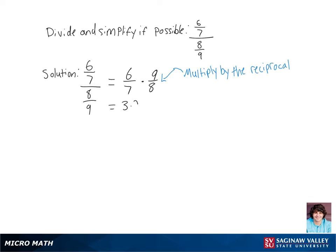Now we're going to multiply the numerator and the denominator across, but let's rewrite 6 as 3 times 2, 9 as 3 times 3, and 8 as 2 times 2 times 2, so that we can simplify our fraction.